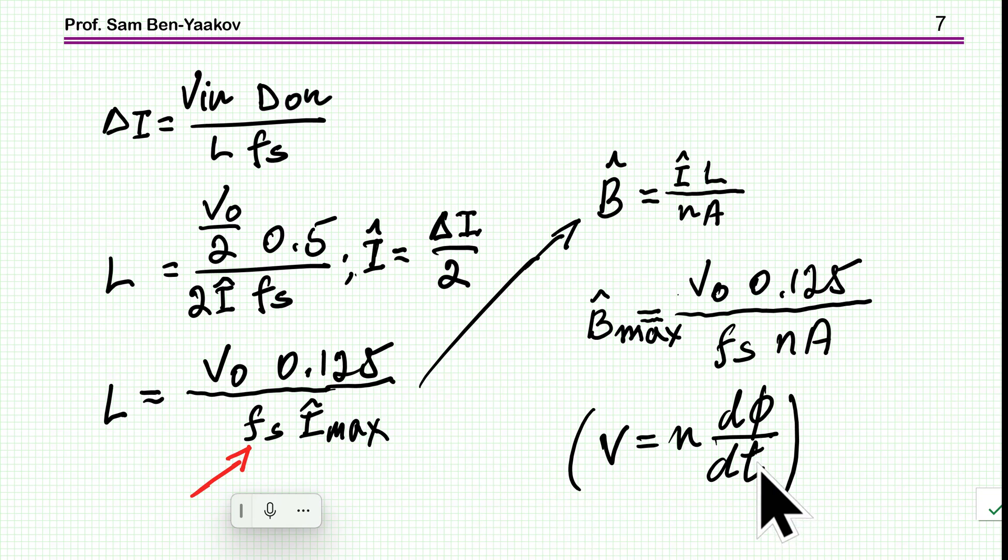I can estimate from the fact that I know the ripple and the maximum value what should be the inductance. We see that the inductance is inversely proportional to the switching frequency, which we know - the higher the switching frequency, the smaller the inductance that we need. This is one reason that we like to go to high frequency, reducing the size of the inductor. From which we can also get the maximum value of the ripple of the magnetic flux density. This is a sort of outcome of Faraday's law, because here we have the voltage and switching frequency.